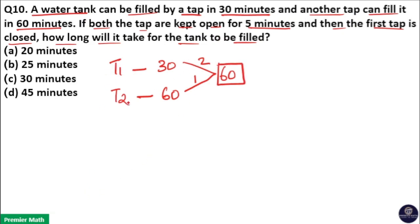Now tap 1 efficiency is 2 liters, tap 2 efficiency is 1 liter. That means in 1 minute, tap 1 and tap 2 can fill 1 plus 2, 3 liters per minute. Per minute, 3 liters is filled.